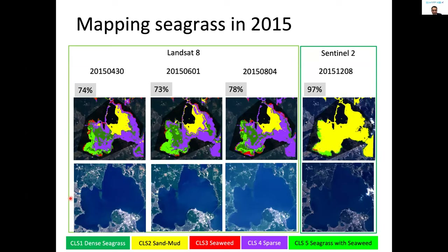This is an example of 2015, where the green colors are seagrass habitats detected by Seagrass Mapper. In December, the size of the green patches decreased, but some seagrasses are still remaining in the coastal zone. This number indicates the overall accuracy of the classified images.